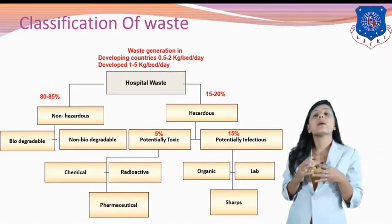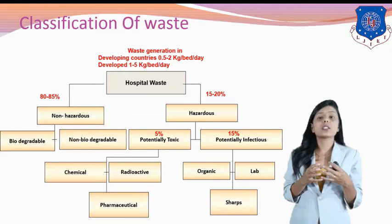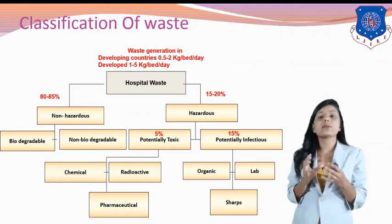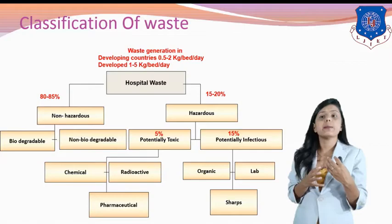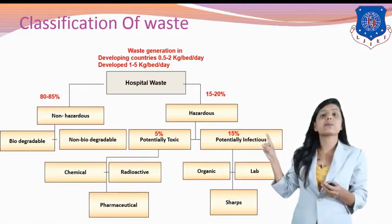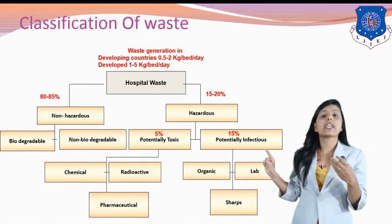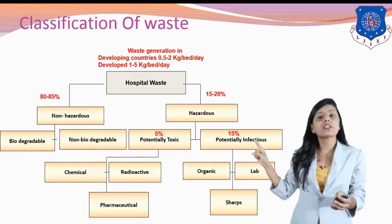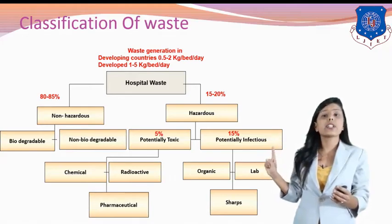Potentially toxic waste is waste that is very poisonous in the environment and dangerous. Potentially infectious waste is waste which can cause infection to other human beings or animals. Chemical and radioactive waste are known as toxic waste because they are poisonous, and pharmaceutical waste are also known as toxic waste.